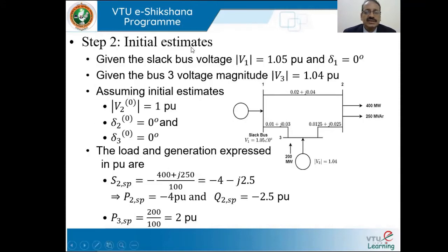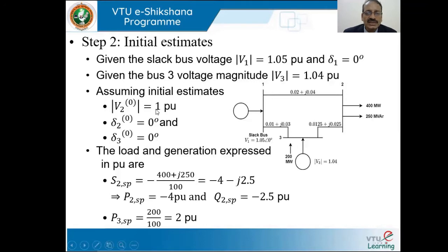For the initial estimates: the slack bus voltage magnitude is 1.05 at angle 0. For bus 3, voltage magnitude V3 = 1.04 per unit is specified. Since the bus 2 voltage is not given, we assume a flat start: V2⁰ = 1 per unit. For bus 3, the angle is not given, so we assume δ3⁰ = 0 degrees.